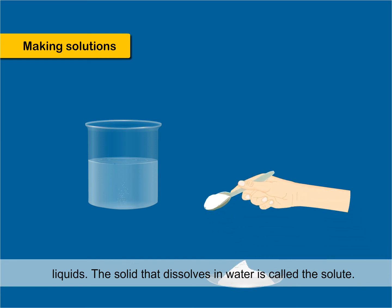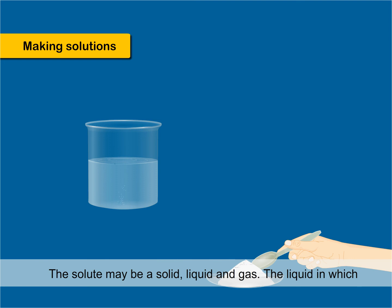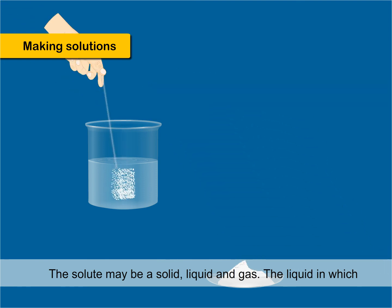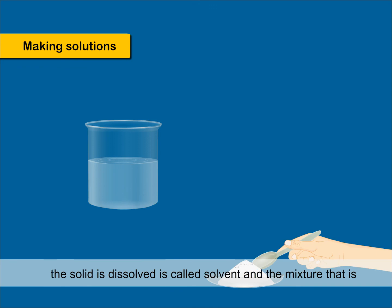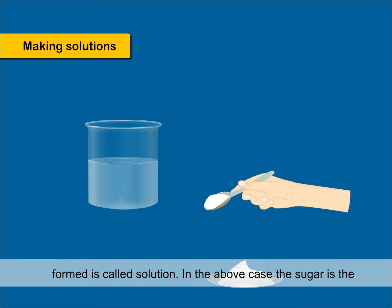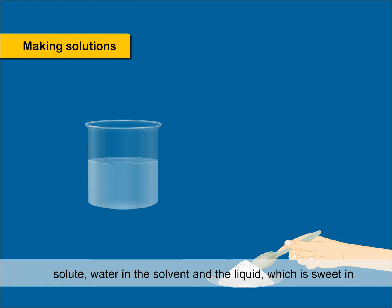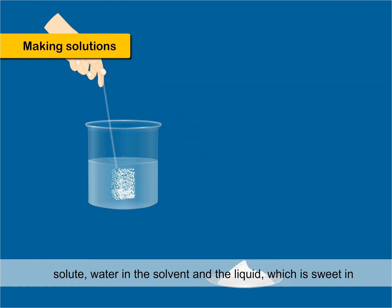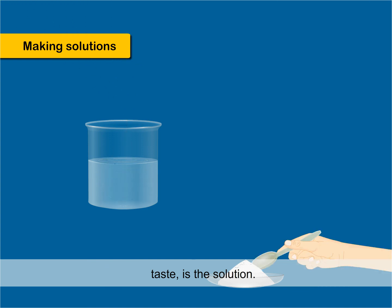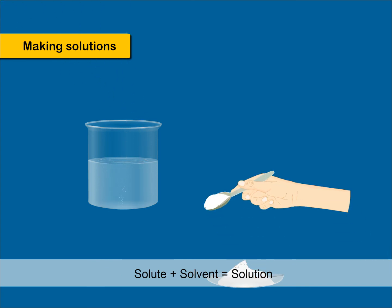There are many solids which mix easily with water or other liquids. The solid that dissolves in water is called the solute. The solute may be a solid, liquid or gas. The liquid in which the solid is dissolved is called the solvent, and the mixture that is formed is called the solution. In the above case, sugar is the solute, water is the solvent, and the liquid which is sweet in taste is the solution. Sugar plus water equals a sweet solution. Solute plus solvent equals solution.